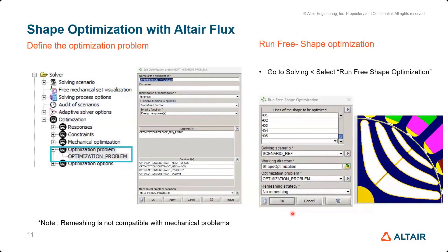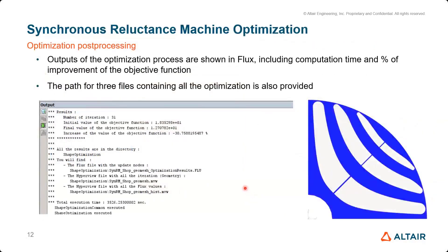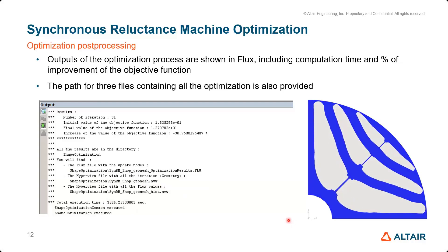Once shape optimization completes, the output window shows the iteration number, the initial value, and the final value from the optimum design, as well as the change in the objective function. You can also see which folder the results are saved in and how long the optimization ran. A movie file shows a video of how the shape evolves during optimization from initial to final design.